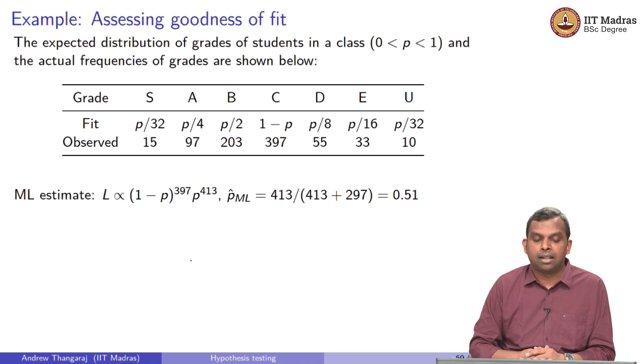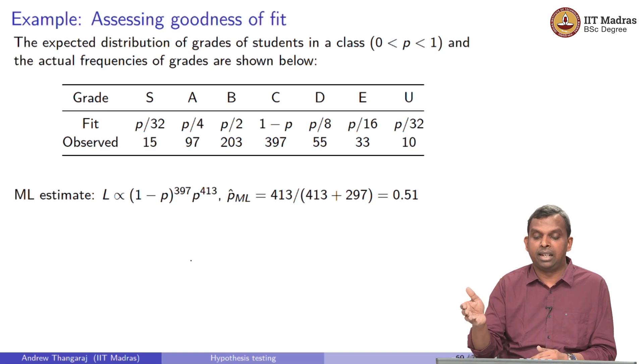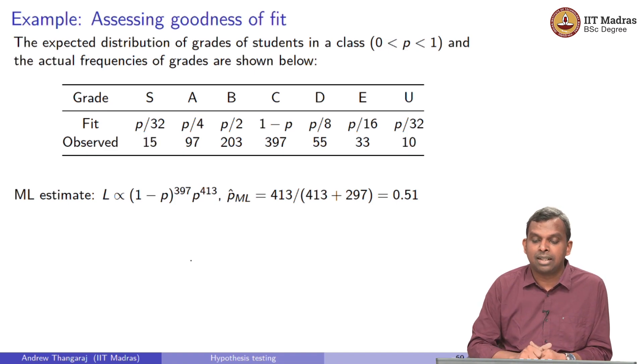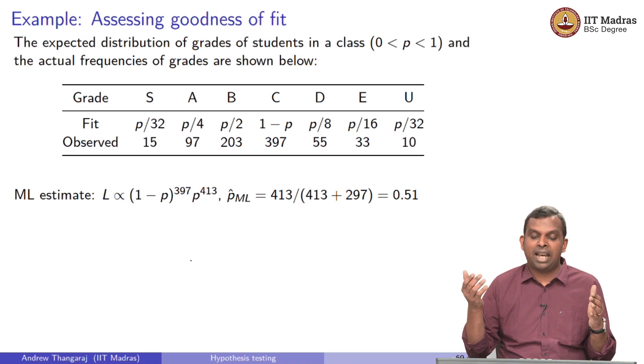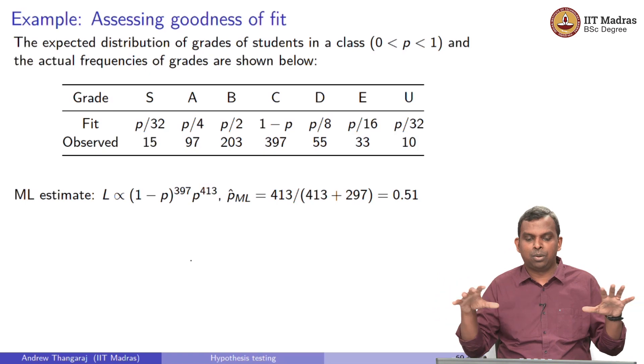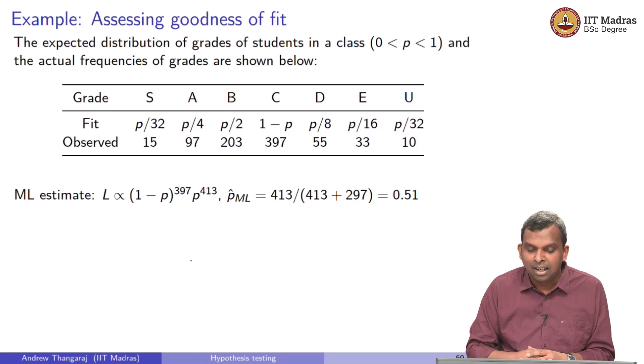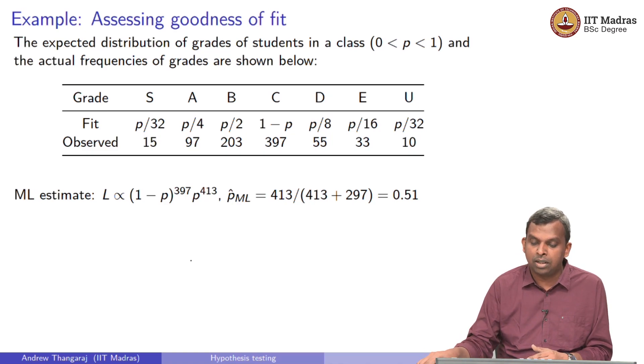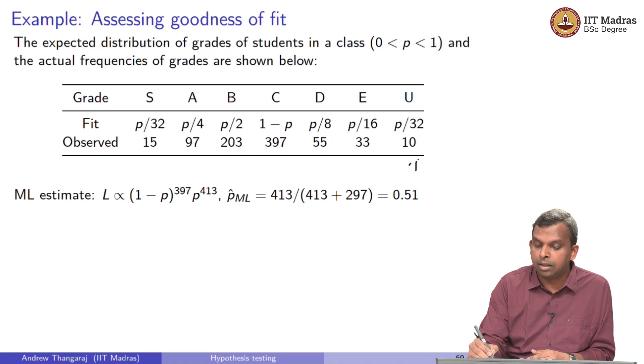You expect that the distribution of grades in a class from S, A, B, C, D, E, U is going to have this distribution. There is a parameter P in the distribution. The number of people who get C, the fraction of people who get C, the probability of someone getting a C is 1 minus P, and then for B is P by 2, D is P by 8, D is P by 16, U is P by 32, A is P by 4, S is P by 32. It is sort of like we are expecting people to have different grades. And in one particular class, I believe there are 810 students in this class, total is 810.